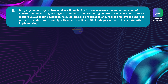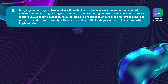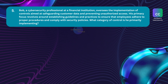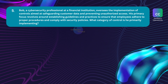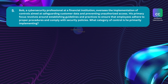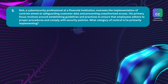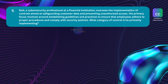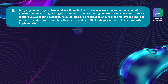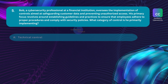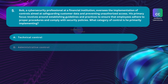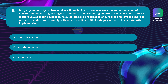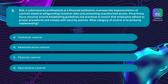Question number 5. Bob, a cybersecurity professional at a financial institution, oversees the implementation of controls aimed at safeguarding customer data and preventing unauthorized access. His primary focus revolves around establishing guidelines and practices to ensure that employees adhere to proper procedures and comply with security policies. What category of control is he primarily implementing? Option A: technical control. Option B: administrative control. Option C: physical control. Option D: operational control.